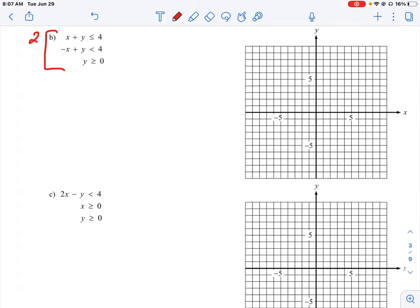So our first one here at the top, x plus y is less than 4. If I'm going to put this into y equals mx plus b form, I'm going to subtract x. So we're just going to have y is less than or equal to negative x plus 4. And then we know from this equation we know that b is equal to plus 4 and m is equal to negative 1 over 1. That's going to be our slope.